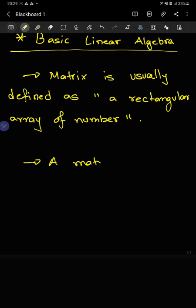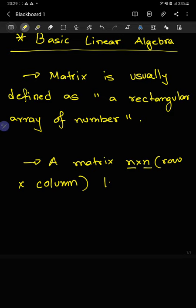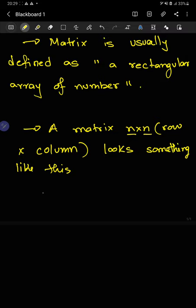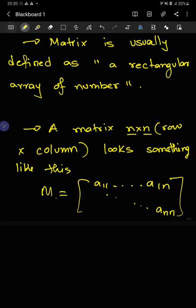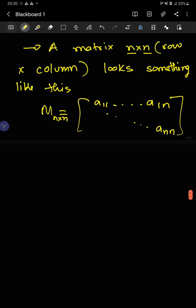A matrix of size n cross n — that is, number of rows times number of columns — looks something like this. Let's say it's a matrix M; these are the entries of the matrix. It's an n cross n matrix. We can write the elements like aij, where i corresponds to the ith row and j corresponds to the jth column.